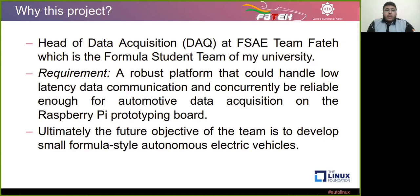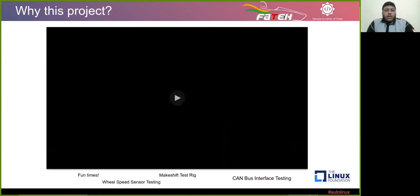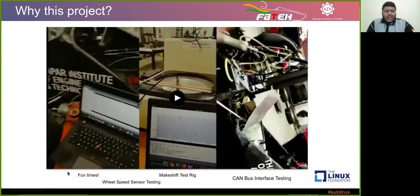For that competition, we required a robust platform that could handle low-latency data communication and concurrently be reliable enough for automotive data acquisition. We did our experimentation on the Raspberry Pi prototyping board, and the ultimate goal of our team is to develop autonomous electric vehicles for Formula Student competitions. Here are some clips showing the fun we had during wheel speed sensor testing, including a makeshift rig using a disk pulley, and checking out the CAN bus interface.